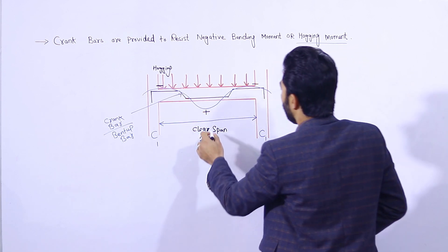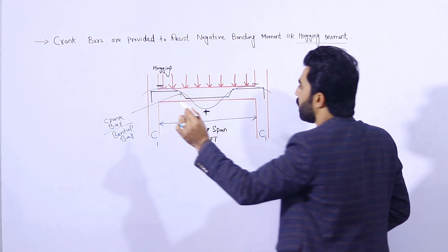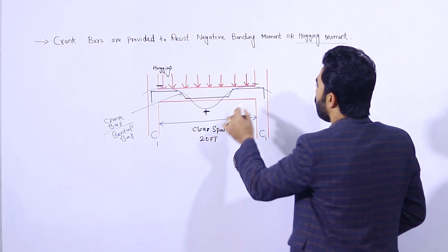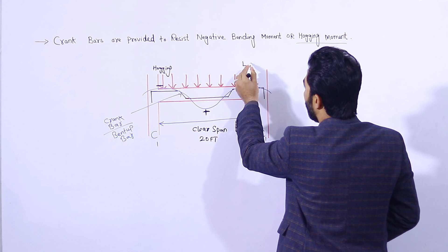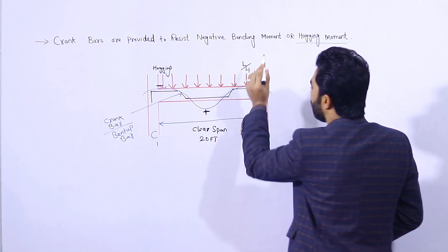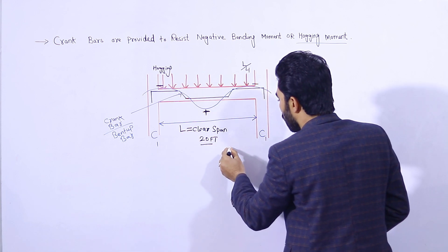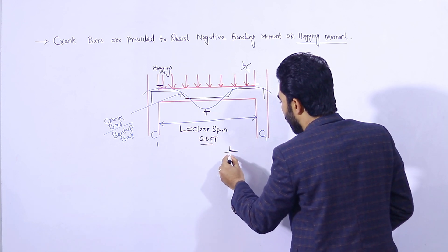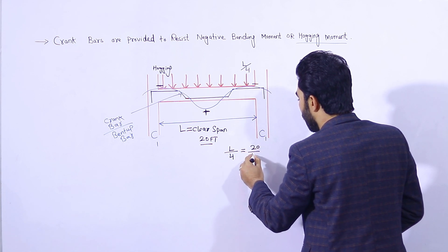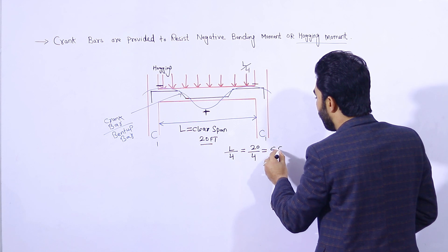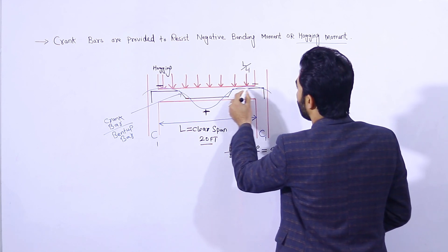To resist the negative bending moment or hogging, we are providing the crank bar. Here we have positive bending moment and here we have negative bending moment. Therefore we bend the bar at the upper portion to a distance of L/4. L/4 means this is the clear span L, which is 20 feet, so L divided by 4 equals 5 feet.